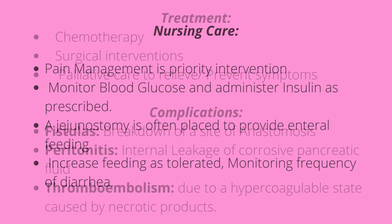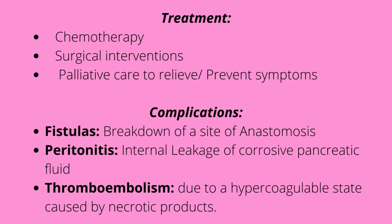Treatment for pancreatic cancer includes chemotherapy, surgical interventions, and palliative care to relieve and prevent symptoms. Because this cancer has a poor prognosis and a high mortality rate, we will send these patients to palliative care to manage their pain. Some complications include fistulas — which is the breakdown of the anastomosis site — peritonitis, which is internal leakage of corrosive pancreatic fluid, as well as thromboembolism, which is due to a hypercoagulable state caused by necrotic products.